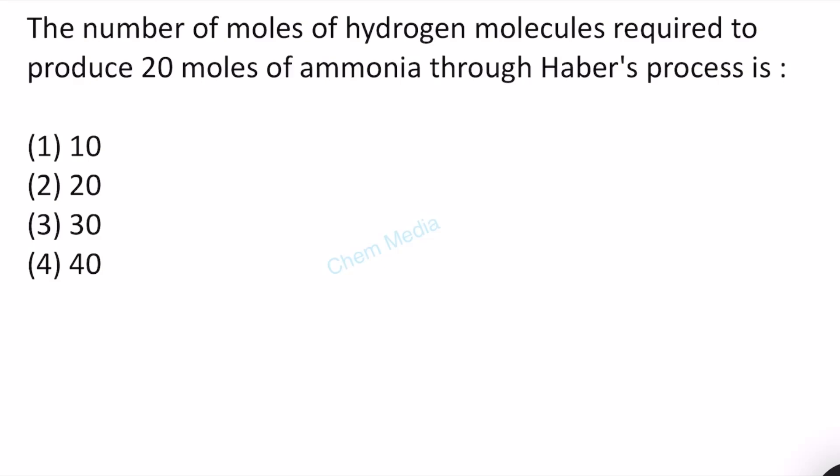The number of moles of hydrogen molecules required to produce 20 moles of ammonia through Haber's process is how much? In Haber process, N2 reacts with H2 and gives ammonia.